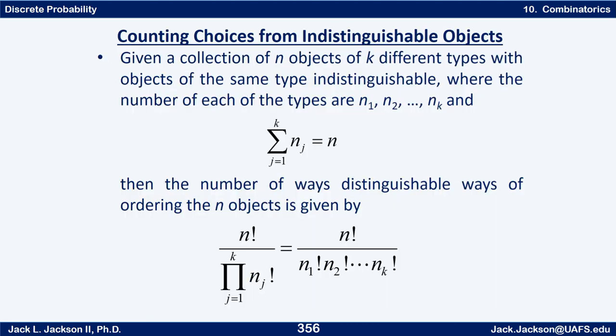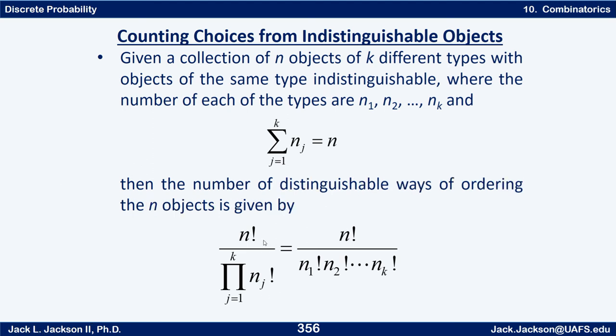And the last one that we did, just to review, is given a collection of n objects of k different types with objects of the same type indistinguishable. So now the objects are not all different. Some of them are the same, and the number of each type of object is n1, n2, up to nk. So all those add up to the total number of objects n. Then the number of distinguishable ways of ordering the n objects is given by n factorial over the product of these n sub j factorial. So that's a total of six different counting arguments. Let's do an example or a series of examples here where we get to use some of these different ones.